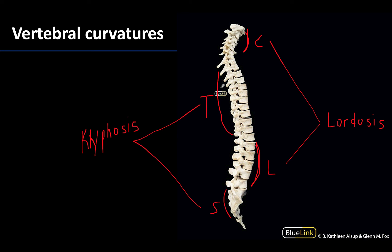So to recap: the normal curvatures of the cervical and lumbar regions are lordotic, whereas the thoracic and sacral regions represent primary curvatures and are kyphotic.